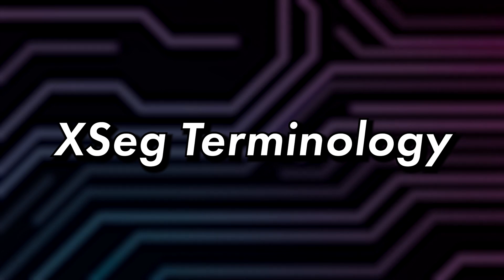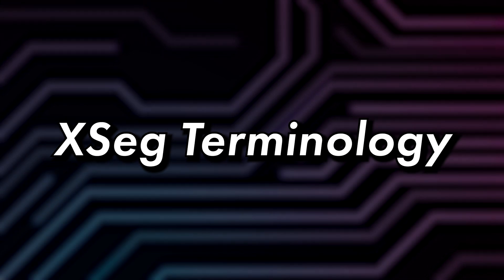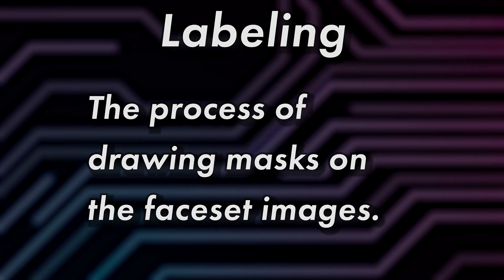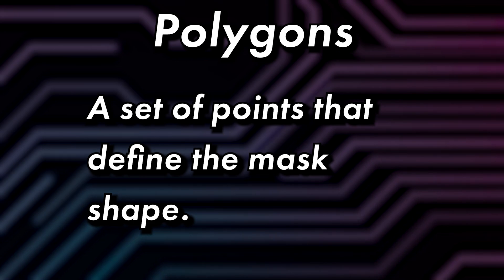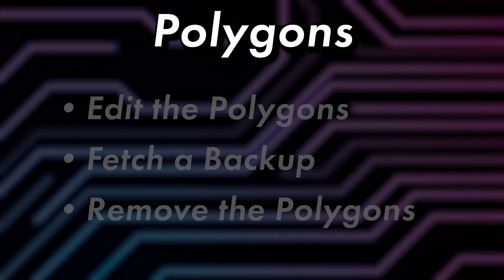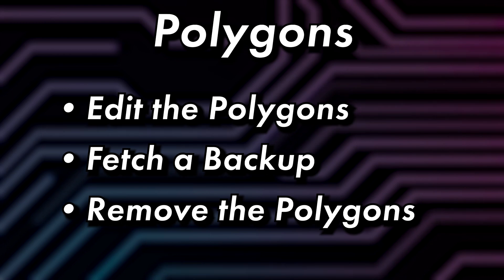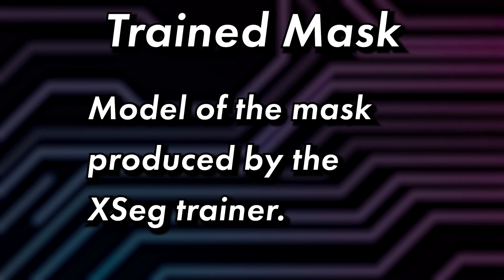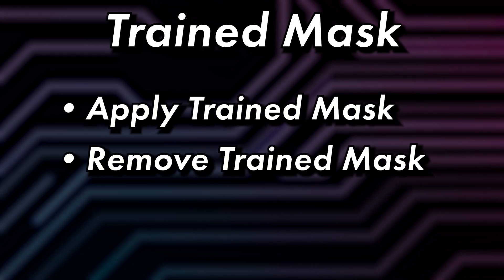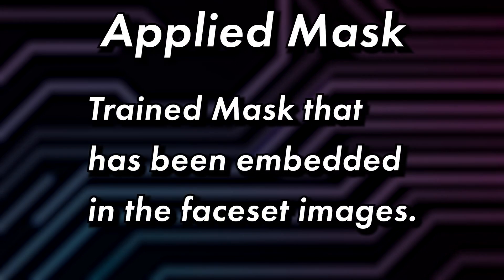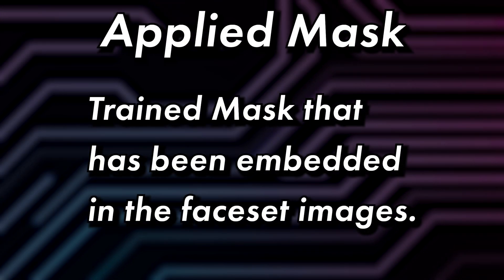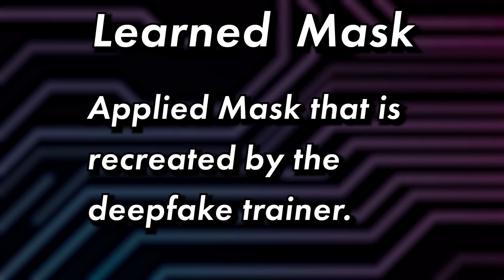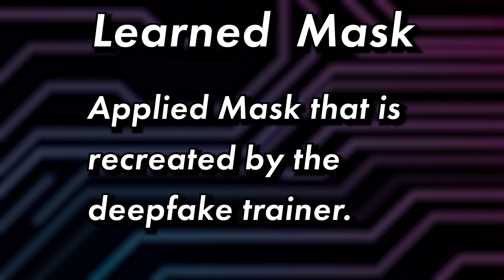Before getting too deep into XSEG, it's important that you understand some basic terminology. The process of drawing the masks is called labeling, as in labeling data. The lines and points that define the mask are called polygons. We can edit, fetch, or remove these polygons from the images. The trained mask is a model produced by the XSEG trainer. We can apply or remove the trained mask. The applied mask is embedded in the face set image and will be used during model training. Then we have the learned mask, which is created as part of the deepfake model and can be used during the final merging process.